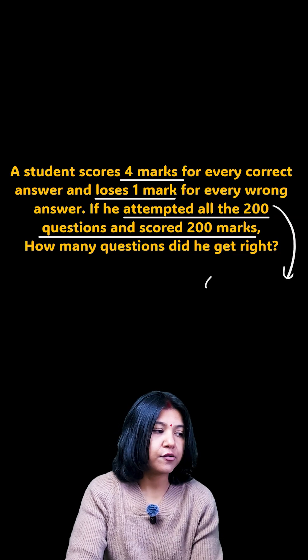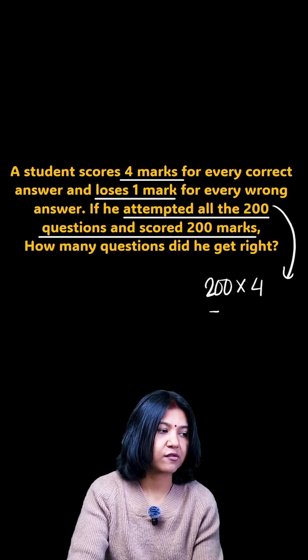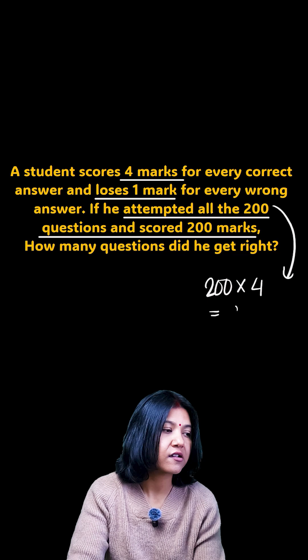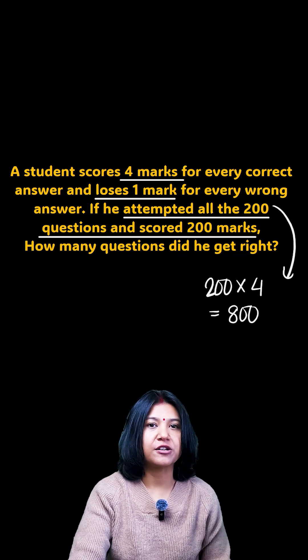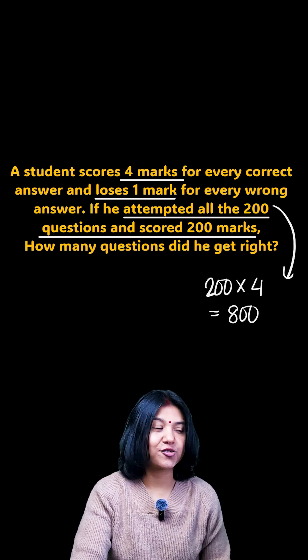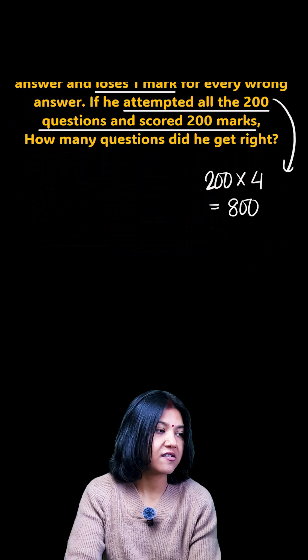Had it been so you would have scored 200 times four because one question carries four marks, so you would have scored a total of 800 marks. But what did you score? You just scored 200, so which means you have lost a total of 600 marks.